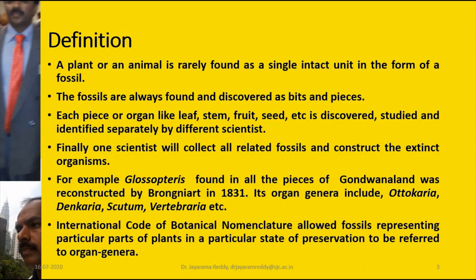For example, we have Glossopteris. Its organs were discovered by different people and called by different names — Otocharia, Dencharia, Scutum, Votabria. These are all different organ genera belonging to the same organism, Glossopteris, but they were not found together. They were found in different places, in different forms. Later, Brogniart in 1831 collated all these discoveries and reconstructed the fossil genus called Glossopteris.